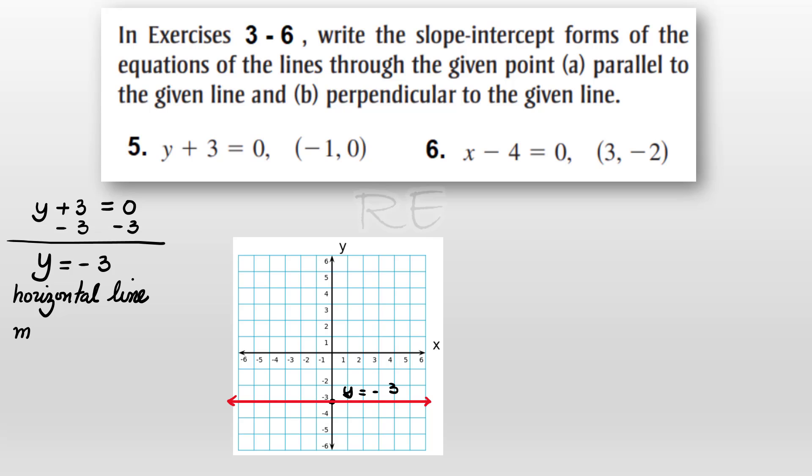Given a slope m equals 0 and given a point negative 1, 0, we need to find the equation of a line parallel to y equals negative 3. That parallel line will have the same slope.